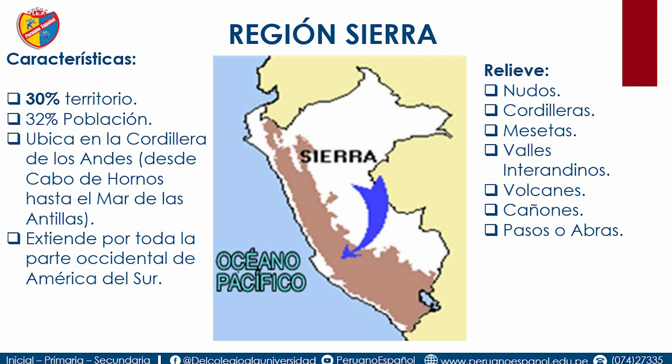La cordillera de Chila en Arequipa es donde nace el río Amazonas. La cordillera del Cóndor es donde tuvimos problemas con Ecuador, con los 78 kilómetros que se solucionaron y se demarcaron.